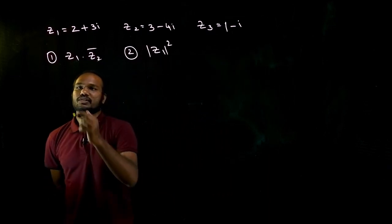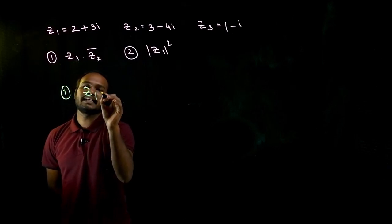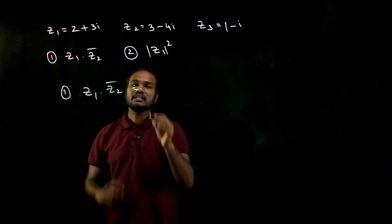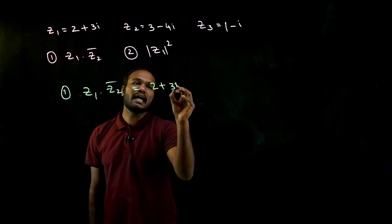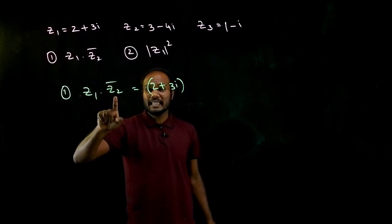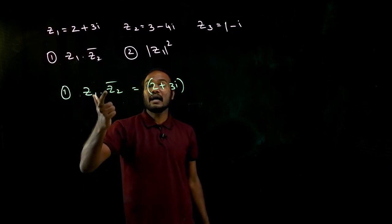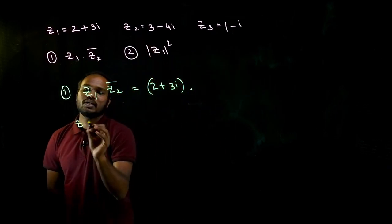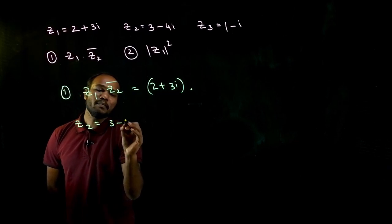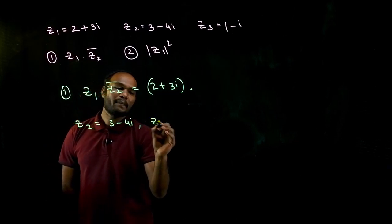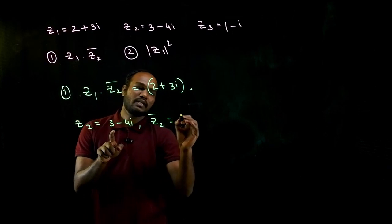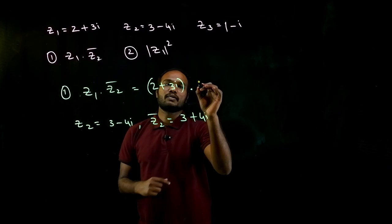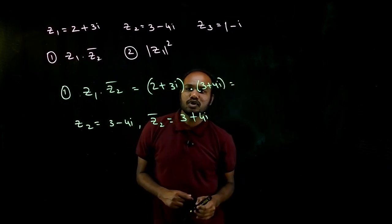Okay, let's solve the first question. We have to find z1 times z2 bar. Z1 we already know is 2 plus 3i. But they are asking you to find z2 bar, not z2. It is the conjugate of z2. So z2 is given as 3 minus 4i, right? So z2 bar will be equal to 3 plus 4i, taking the opposite symbol.